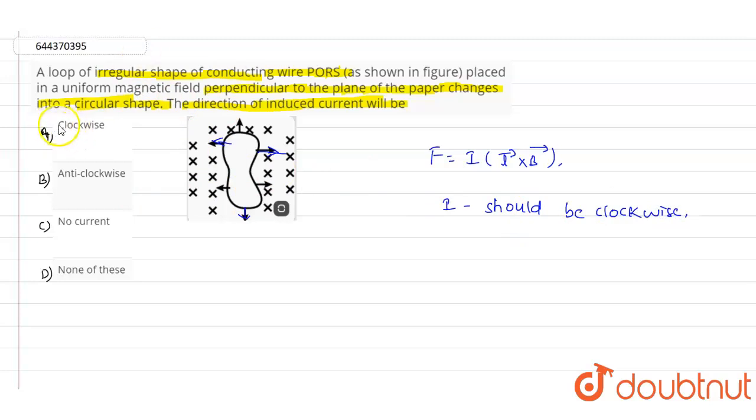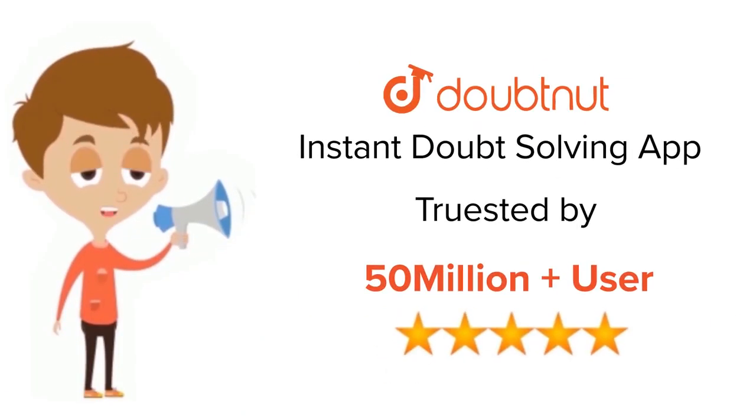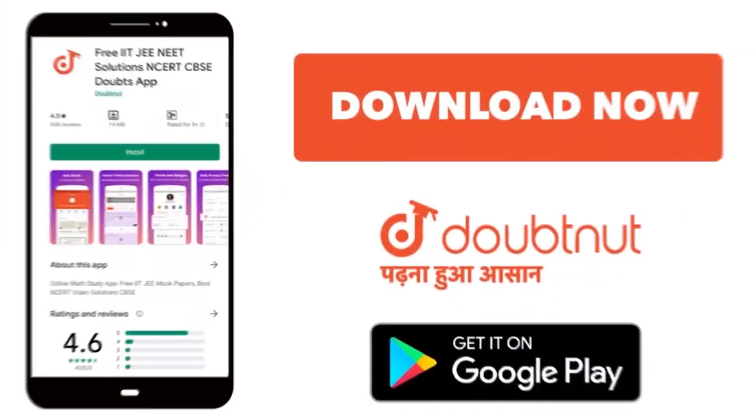According to that, out of these four options, option A is the correct answer for this question. Thank you. For class 6th to 12th, IIT-JEE and NEET level, trusted by more than 5 crore students, download Doubtnut app today.